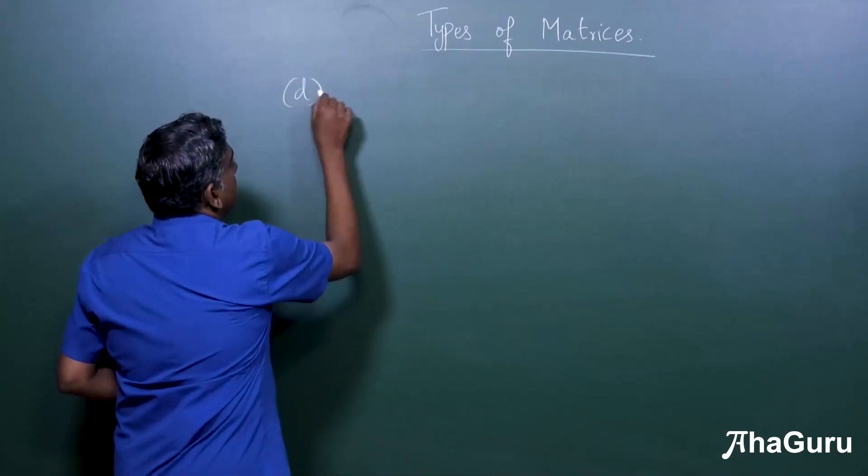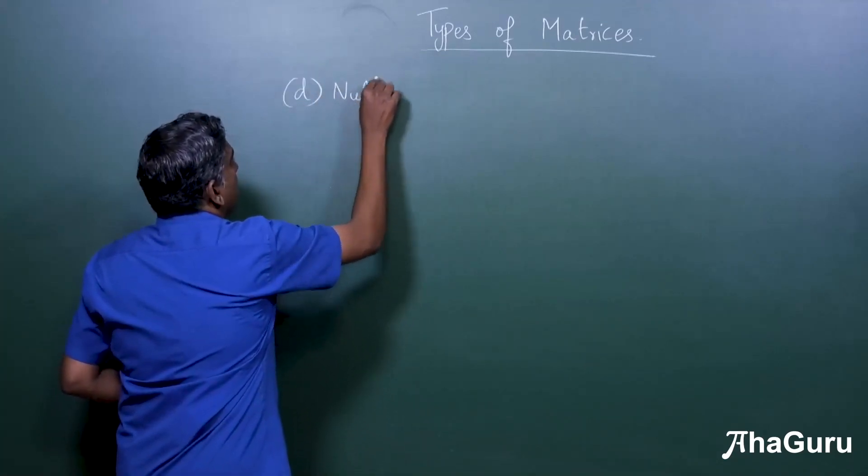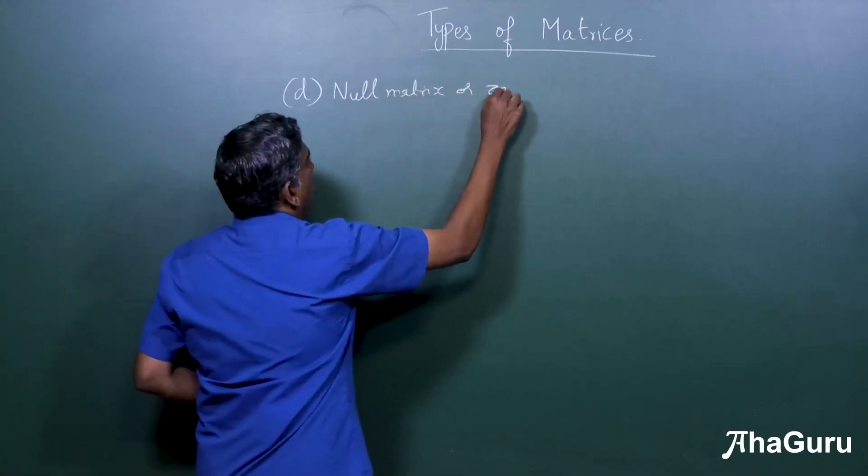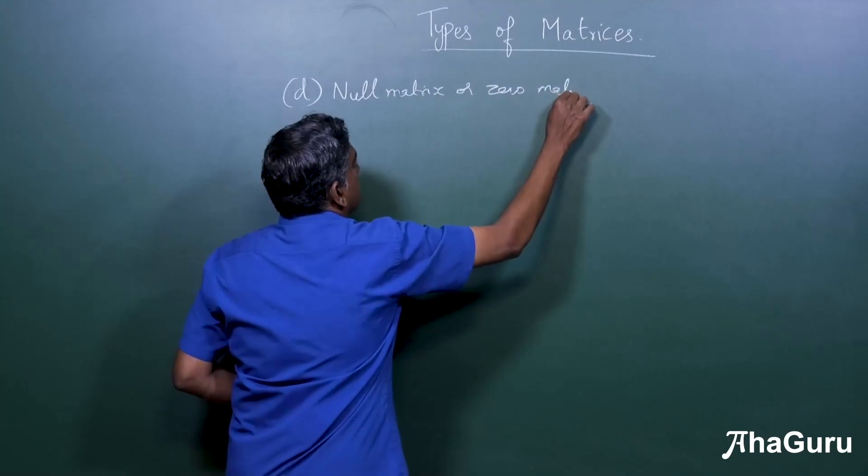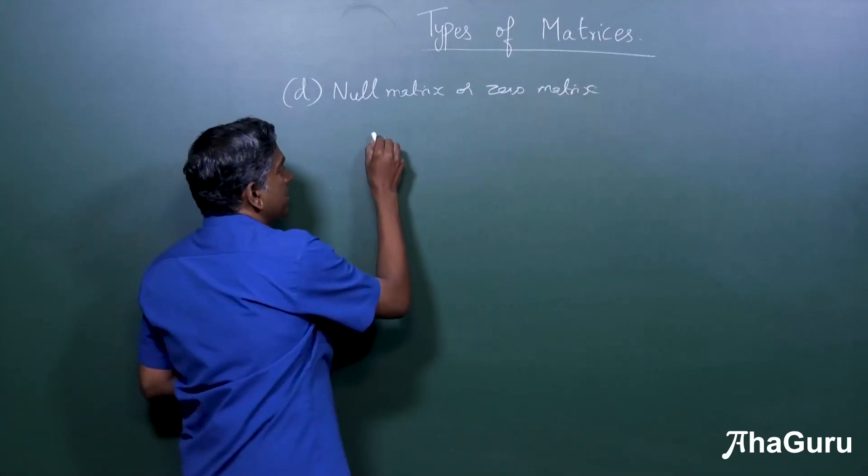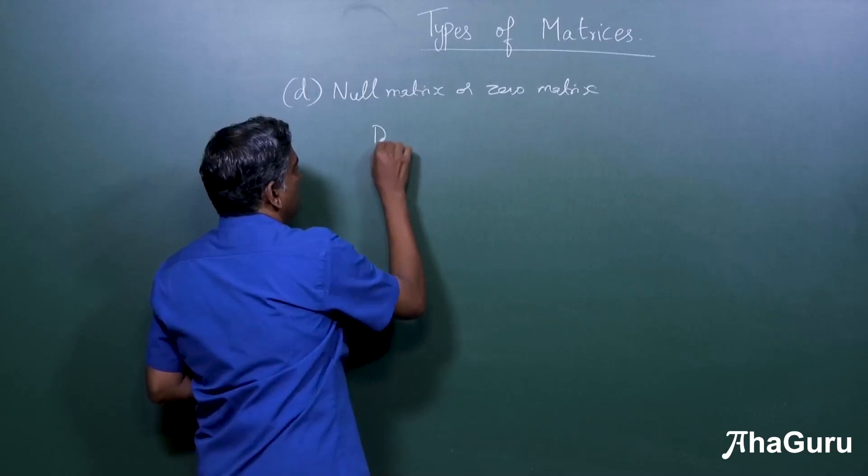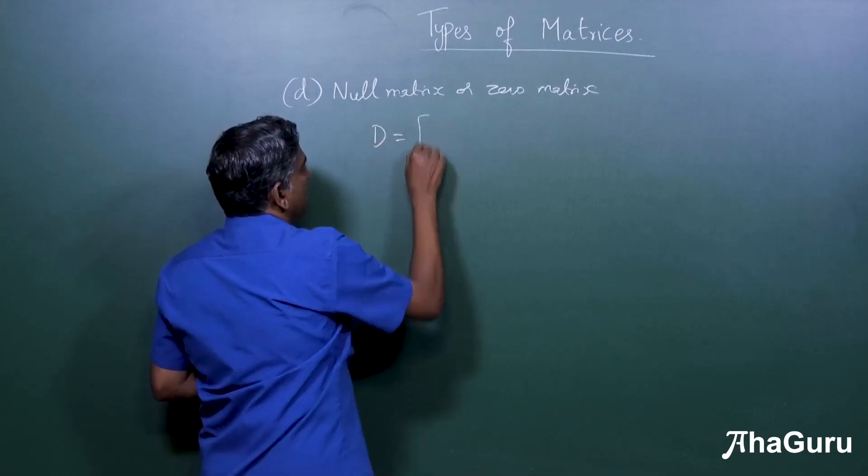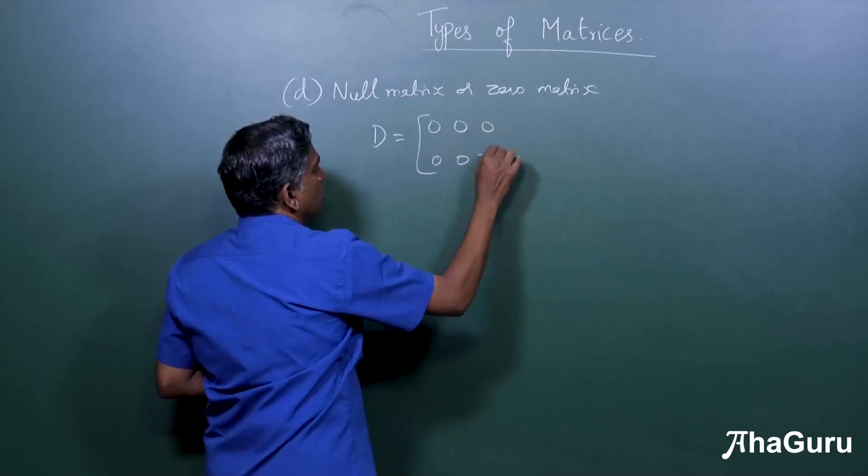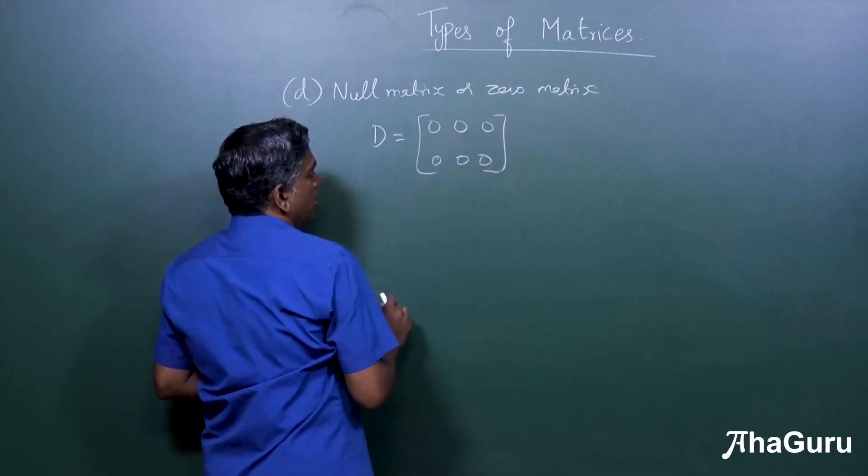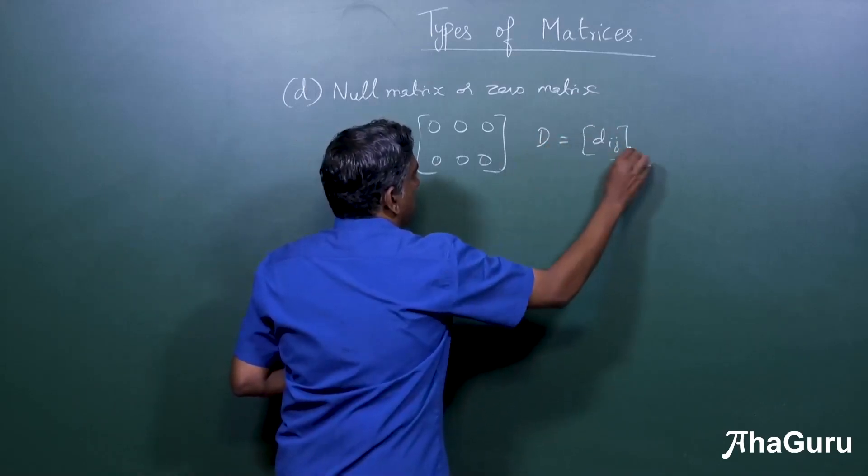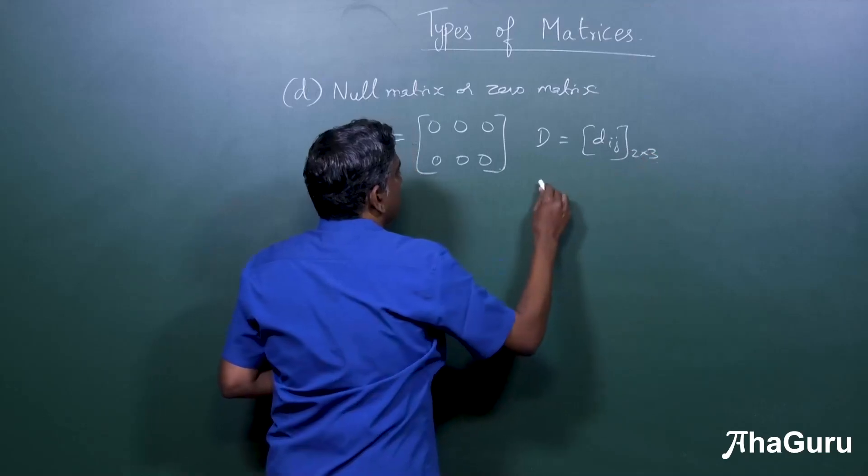The next type is what we call as the null matrix or zero matrix. This is a very simple idea. A matrix is a null matrix if all its entries are zero.